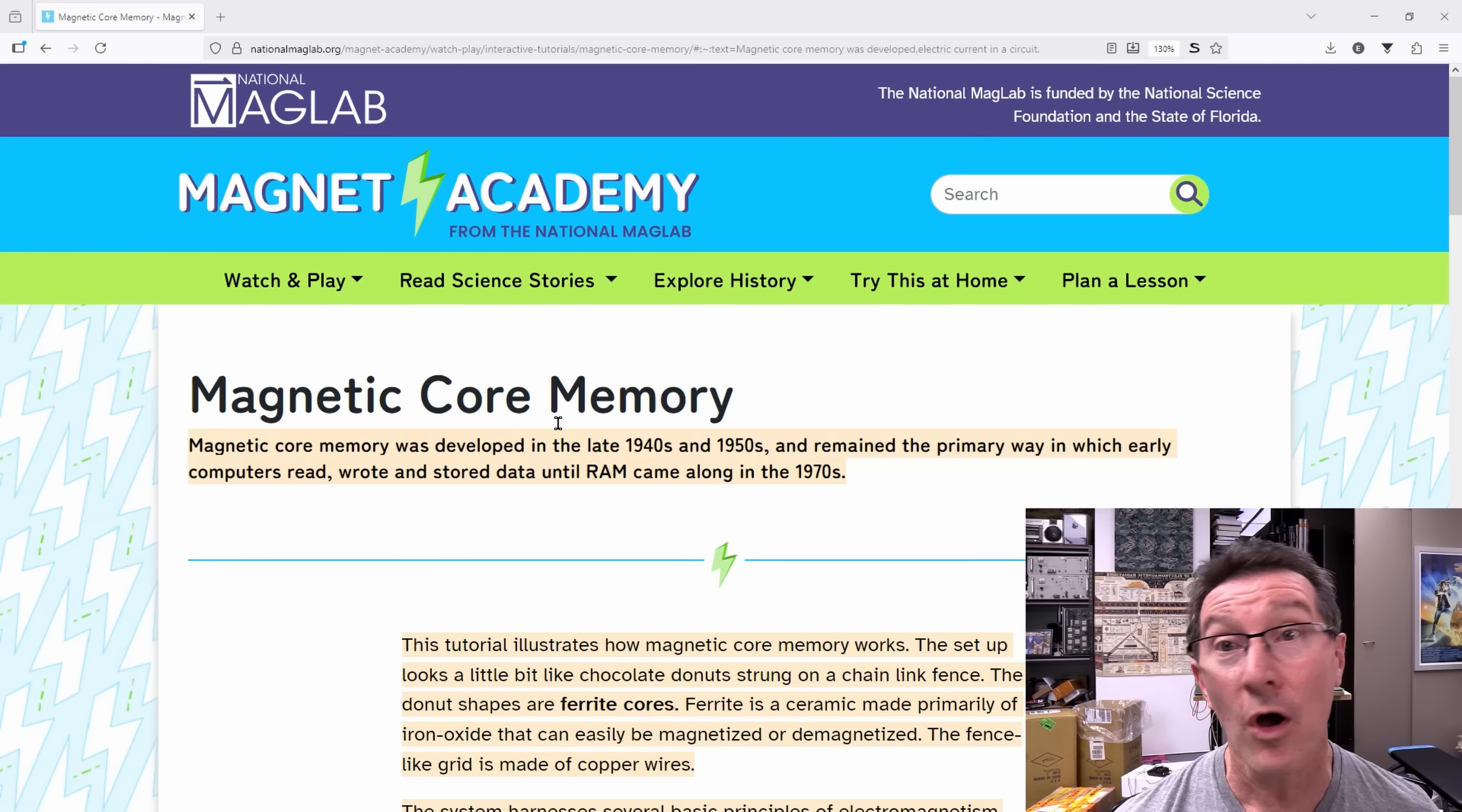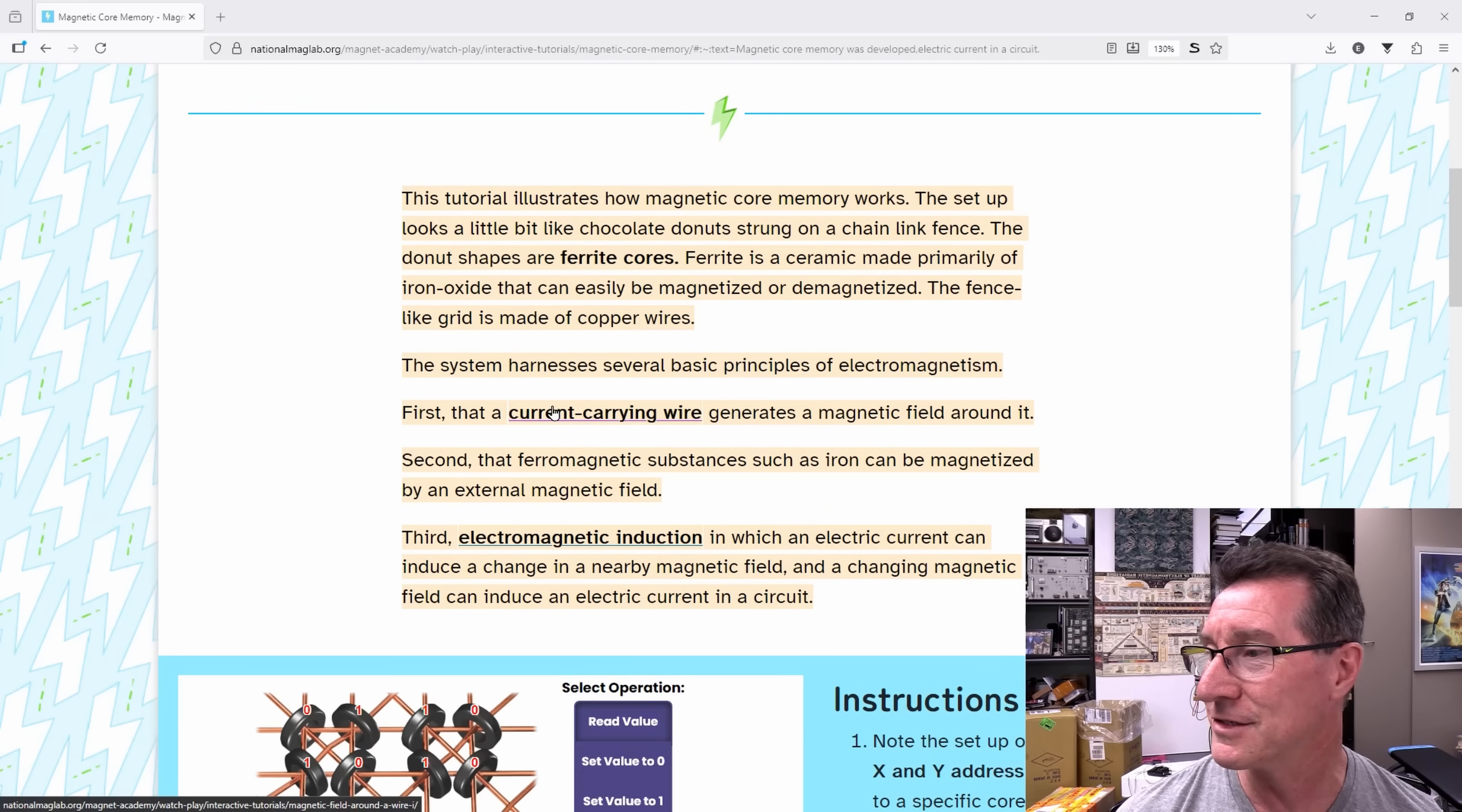So to show you how this actually works, I found this really cool National Mag Lab simulator animation. The National Mag Lab is funded by the National Science Foundation in the state of Florida. Thank you very much, Floridians, for this. This tutorial illustrates how magnetic core memory works. The setup looks a bit like chocolate doughnuts strung on a chain-link fence. The doughnut sheets are ferrite cores.